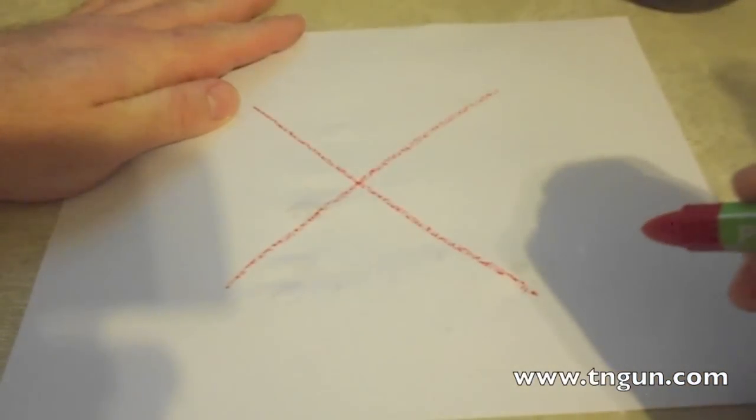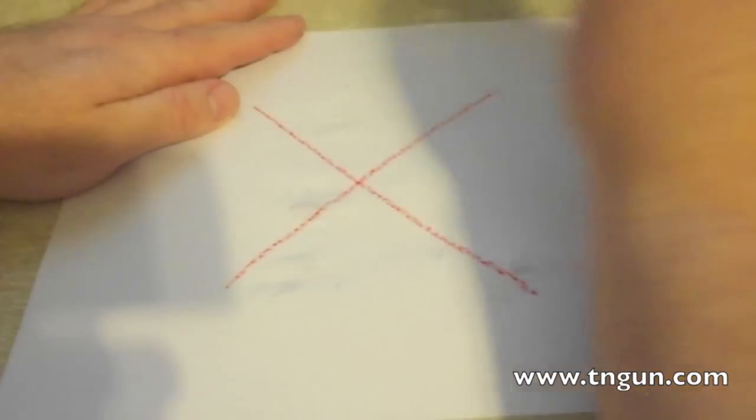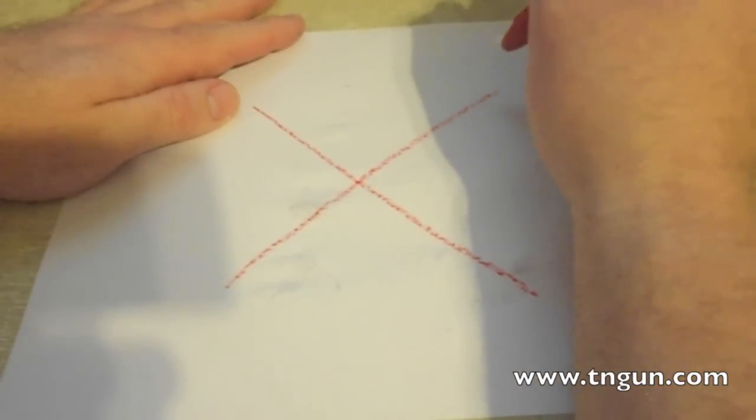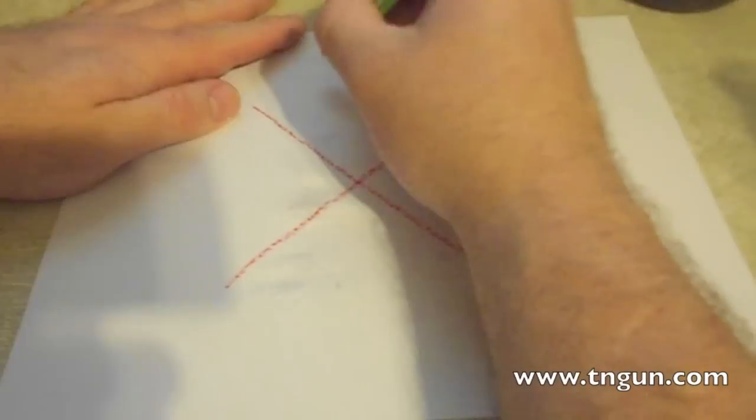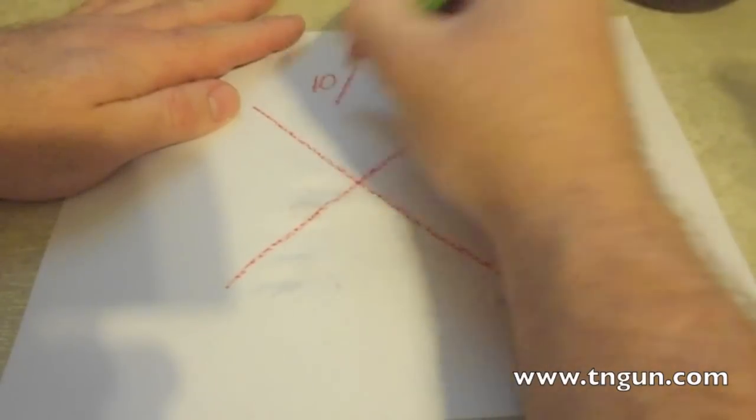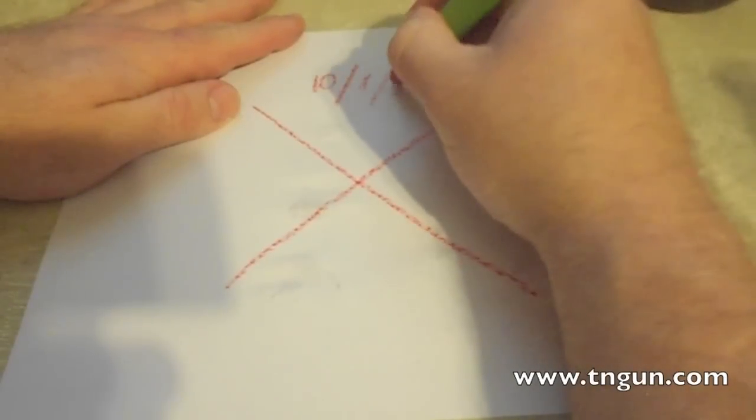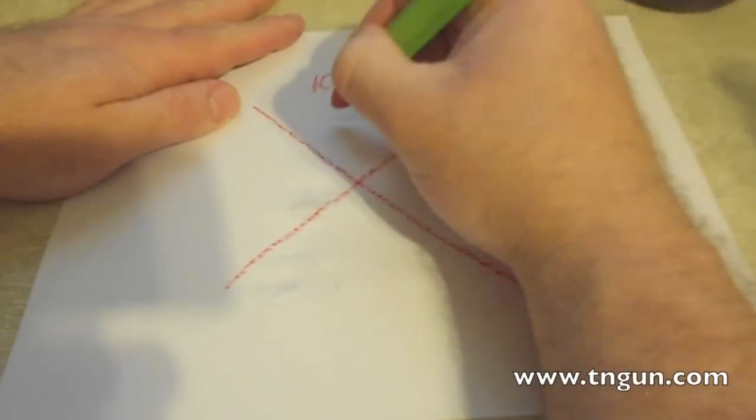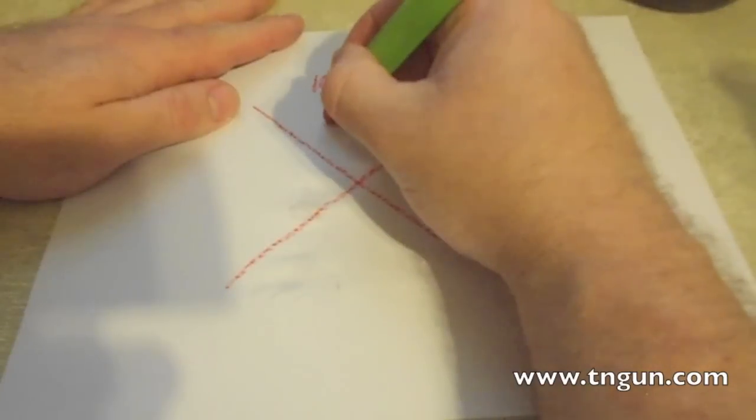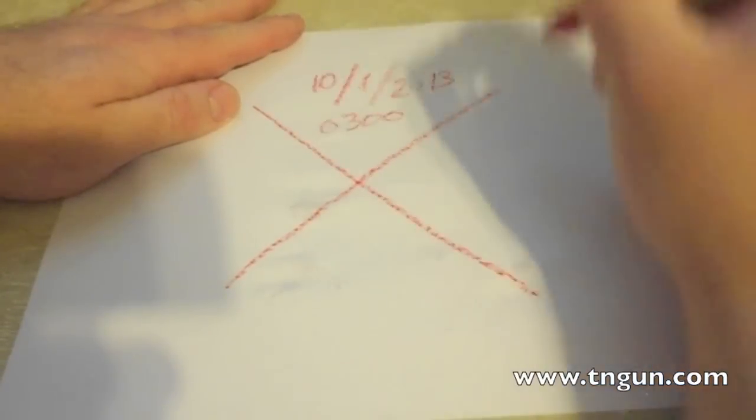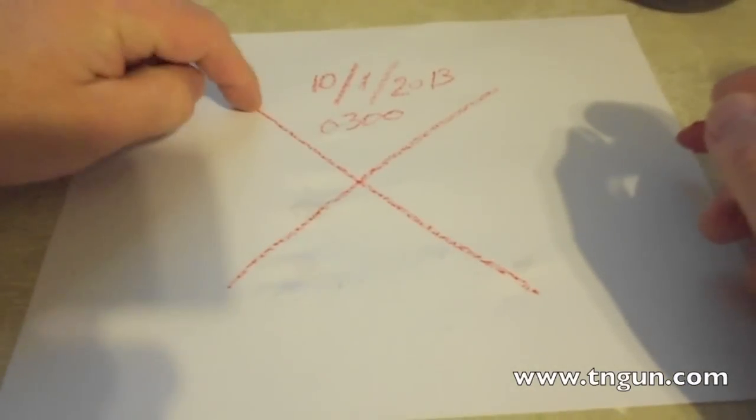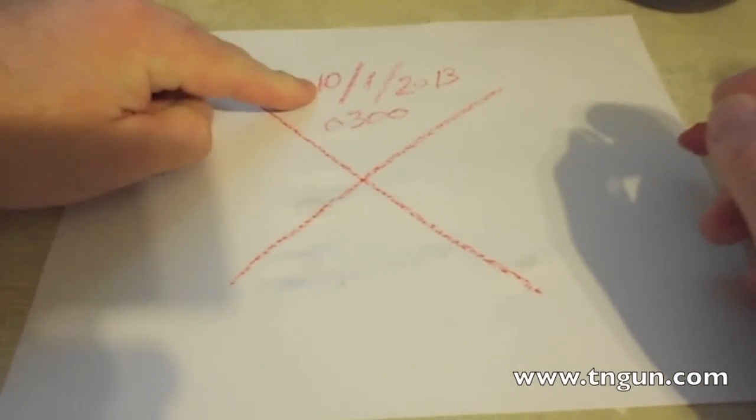At the top, you're going to put the time and date that you left the building. So let's say today is October 1st, 2013, and we got done with the search at three o'clock in the morning, so 0300. That lets us know we were done searching on October 1st at 3 in the morning.